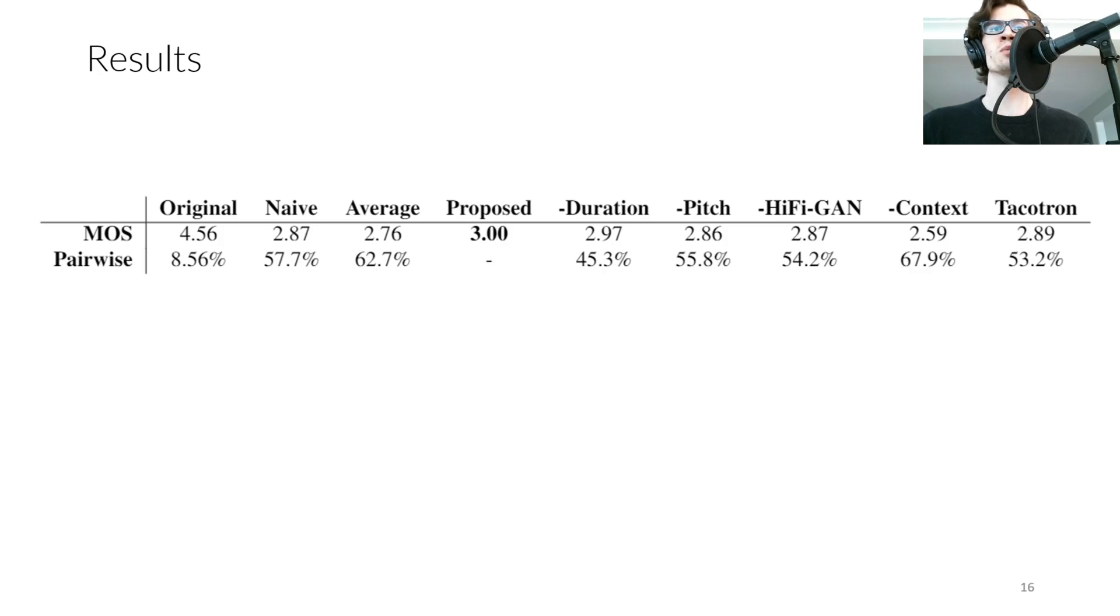We compare the original speech, the naively copy-pasted speech, speech that has been modified with TDP-SOLA to have monotone pitch and average phoneme durations, our proposed method, four ablations, and speech modified to have the same prosody as the output of a multi-speaker TTS system based on Tacotron 2. We ablate the duration generator by using the same phoneme durations as the naive case. We ablate the pitch generator by using the same pitch as the naive case. We ablate HiFiGAN by removing that denoising step from post-processing, and we ablate context awareness by performing prosody generation without context conditioning.